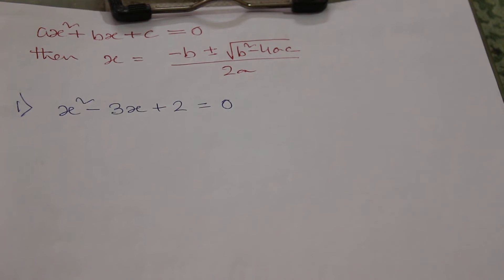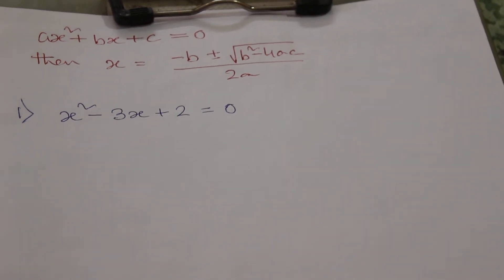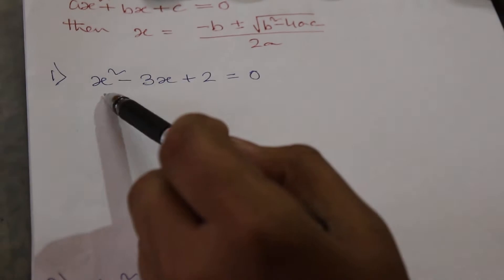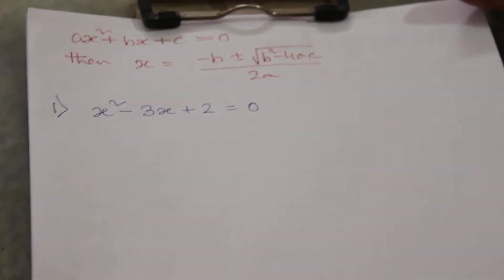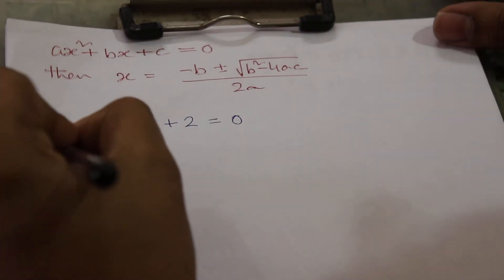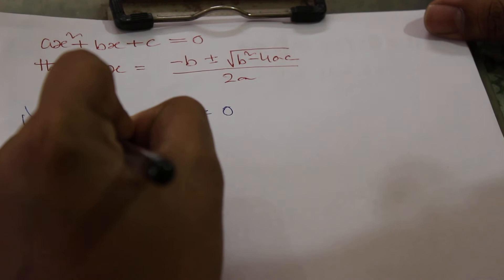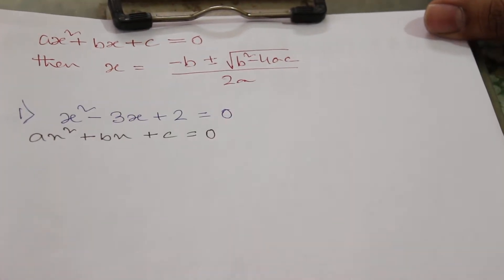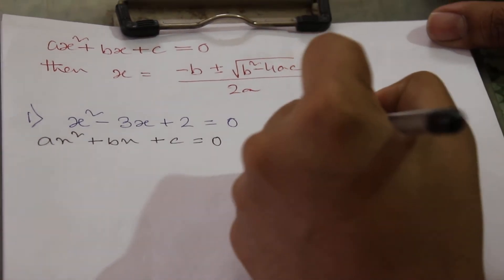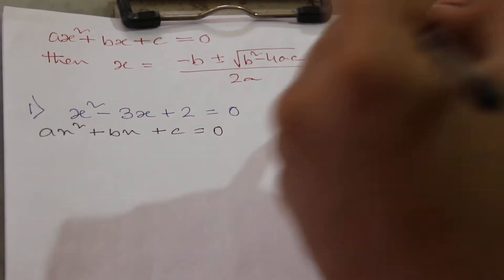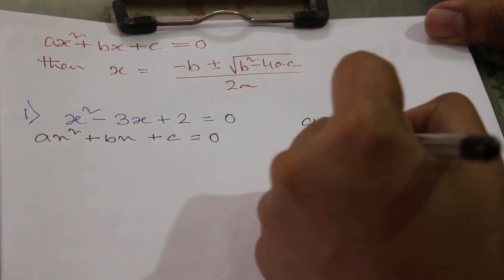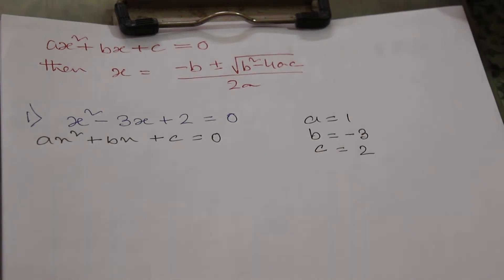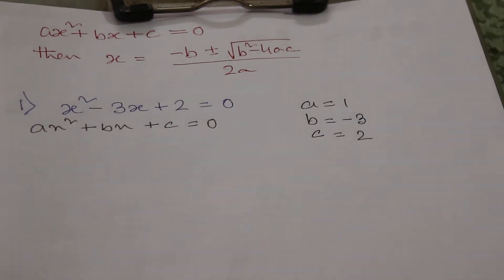Let's start explaining this with some examples. This is our first quadratic equation. We will compare this with the basic equation we have, so a will be equal to 1, b will be equal to −3, and c will be equal to 2. Now we have to calculate two roots of x.